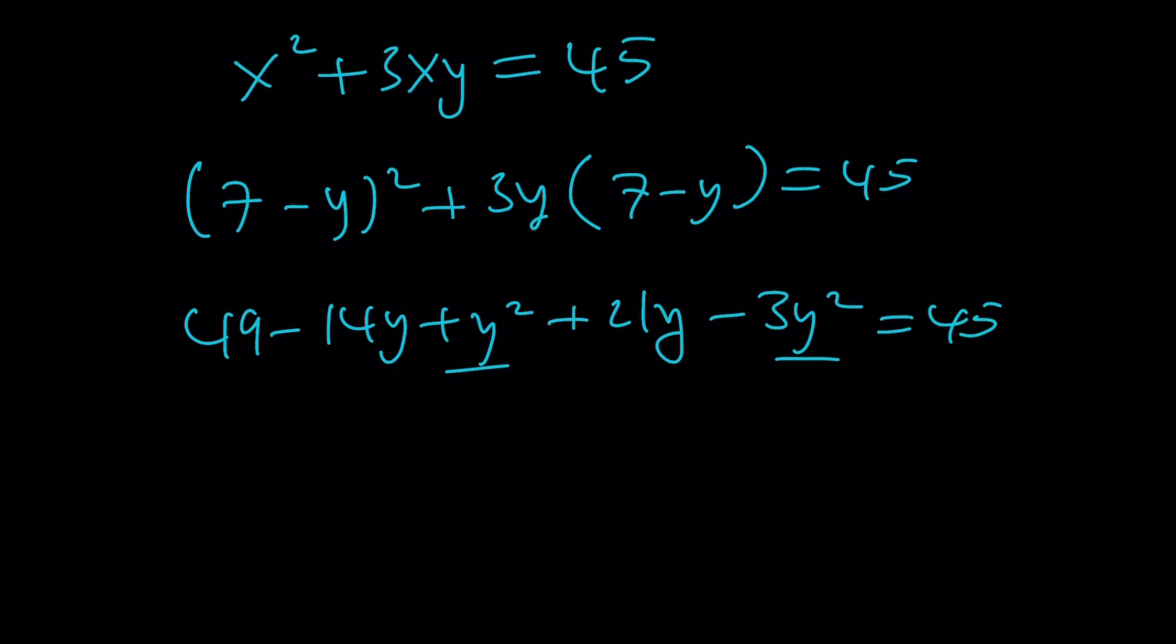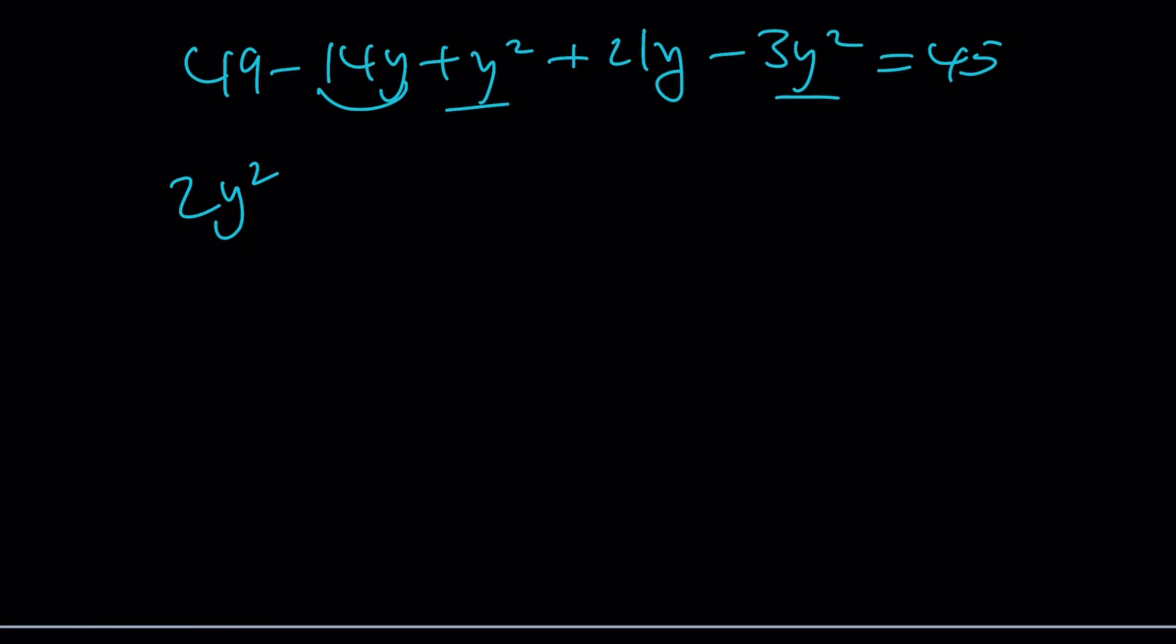This gives us negative 2y squared. Put it on the right-hand side. That becomes positive. This gives us positive 7y. Put it on the right-hand side with the negative sign or opposite sign. And subtract 49 from 45. That's going to give you a negative 4. Wow. This was a lot of work, right?